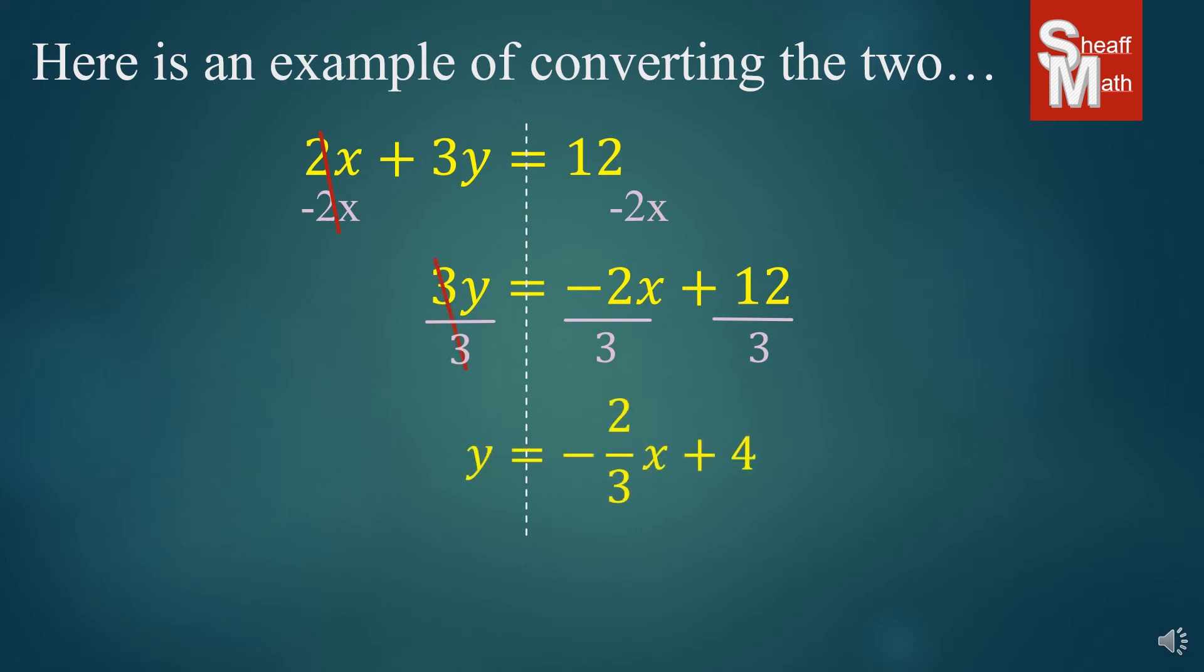Then we're left with y = -2/3x + 4. And I always put the fraction out in front of the x because when we graph these, it's going to help us a lot easier with the slope.